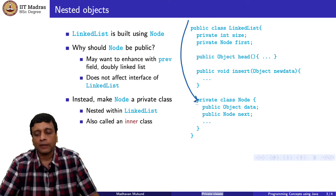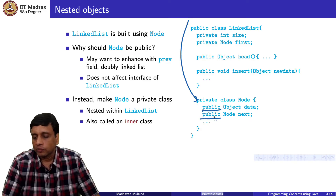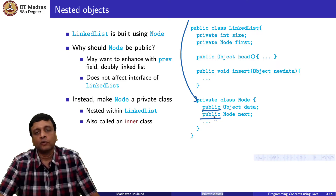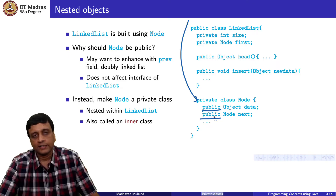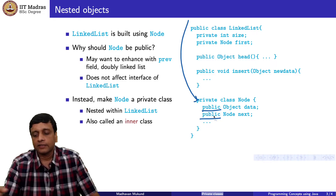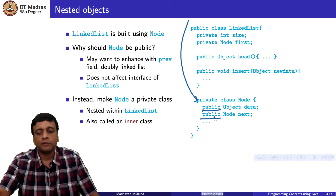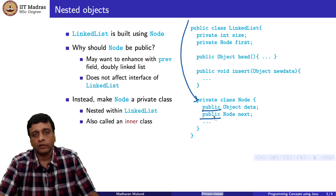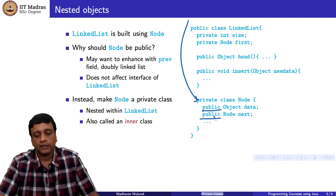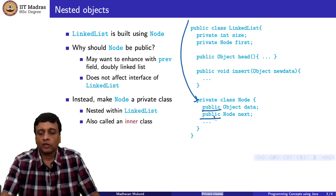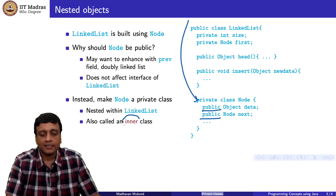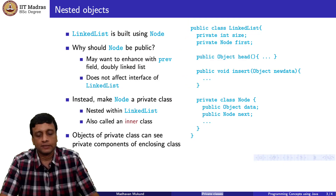You can push the node class inside the definition of linked list and make it a private class. This private class has the same structure as before — it has a data value and a next pointer — but these are now accessible only from inside, because nobody outside even knows of the existence of this node class. Because it is defined inside another class, it is sometimes also called an inner class.